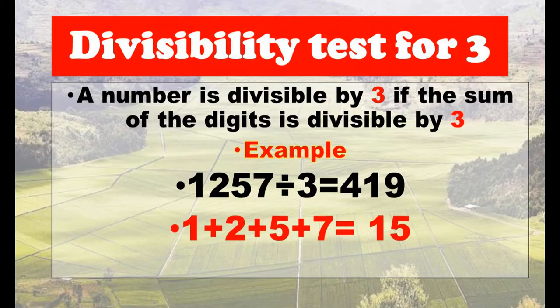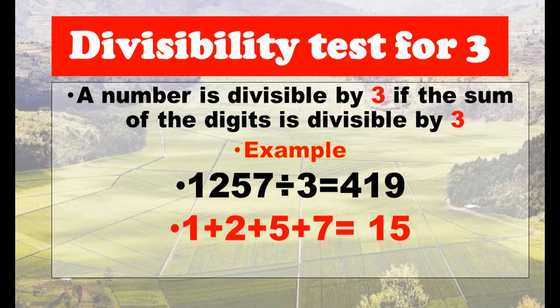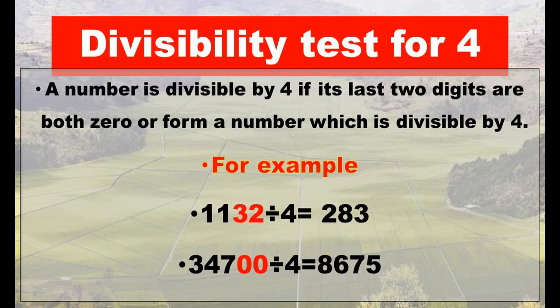Divisibility test for three: a number is divisible by three if the sum of its digits is divisible by three. For example, 1,257 divided by 3 equals 419. We look at the sum: 1 plus 2 plus 5 plus 7 equals 15. Since 15 is divisible by three, this confirms the number is divisible by three.